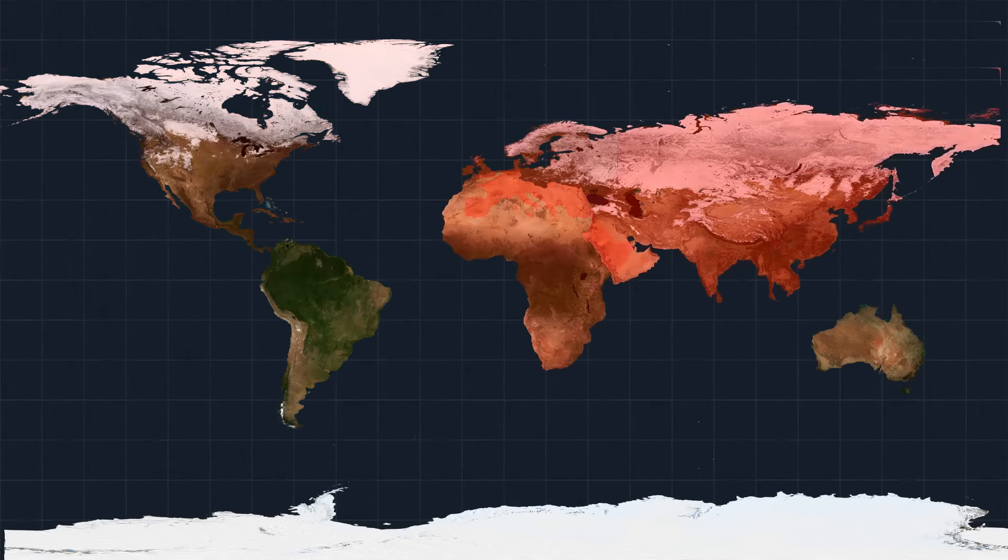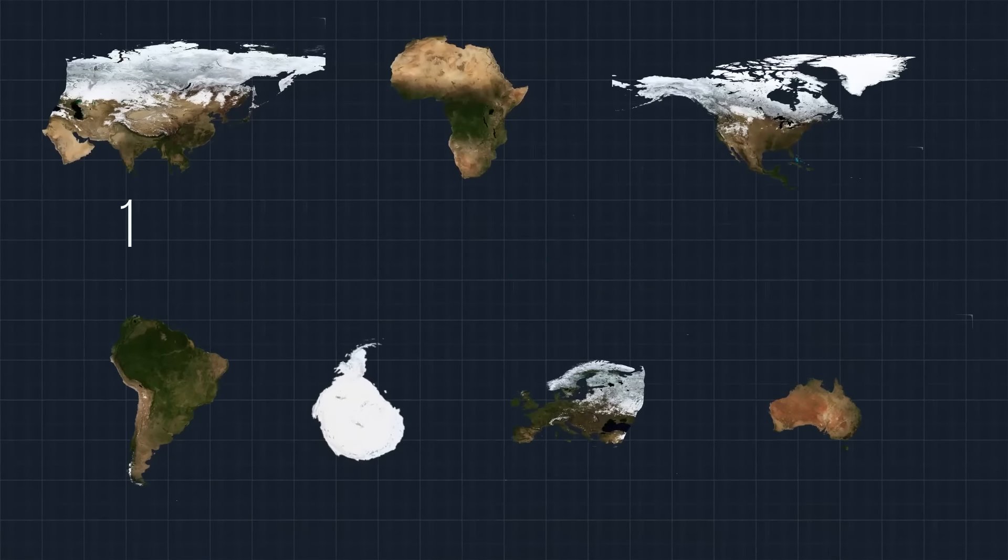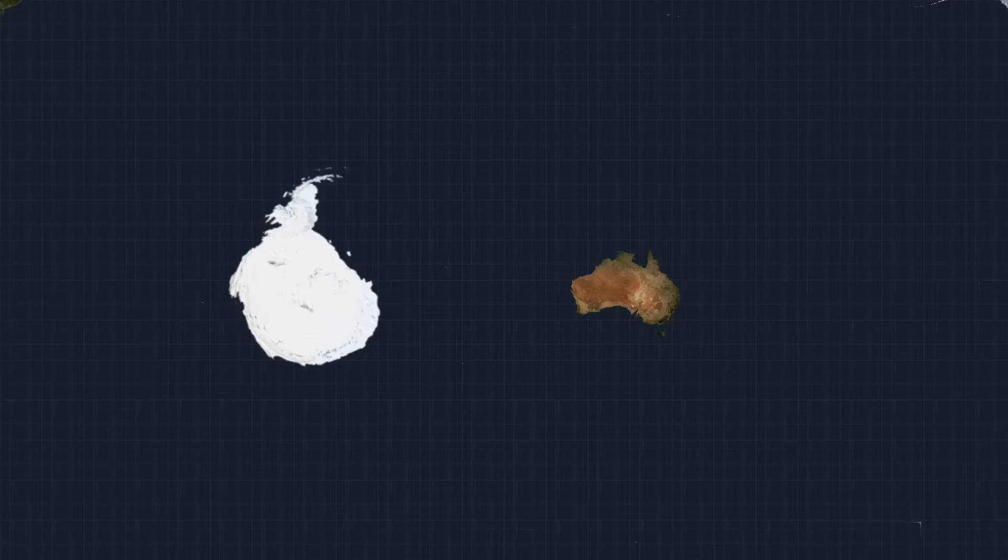Antarctica is one of the world's seven continents in the Southern Hemisphere. It's the fifth largest continent in terms of total area, and that means it's almost twice the size of Australia.